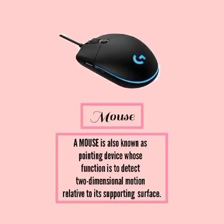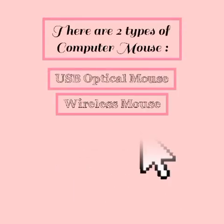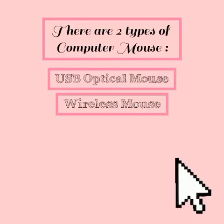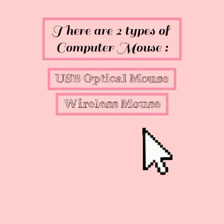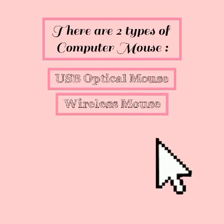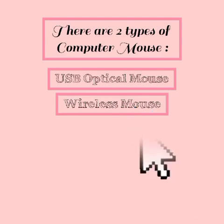Mouse. A mouse is also known as a pointing device whose function is to detect two-dimensional motion relative to its supporting surface. There are two types of computer mouse: the USB optical mouse and the wireless mouse.